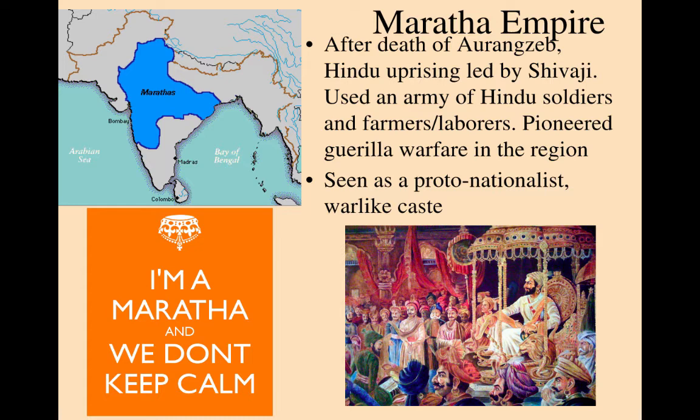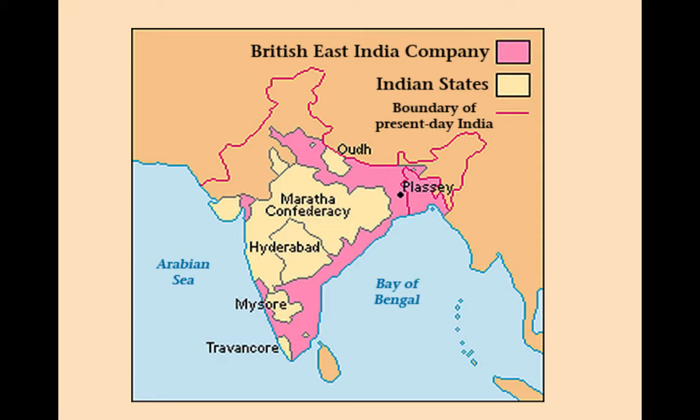The Maratha are known as this proto-nationalist, war-like caste — very rebellious. Generally Hindu soldiers, but in particular championing the farmers and the laborers. So they're taking over the northern section, as the south is really fragmented and even more vulnerable to British influence. As we approach the 1850s, the Maratha have most of northern and central India, whereas most of the south and the eastern coasts have been heavily influenced by the British East India Company. At this point, Britain has more of an economic and political influence over India, but it is not a direct colony.